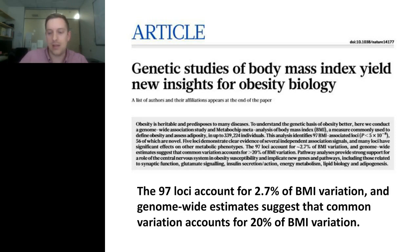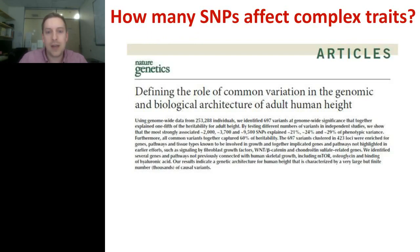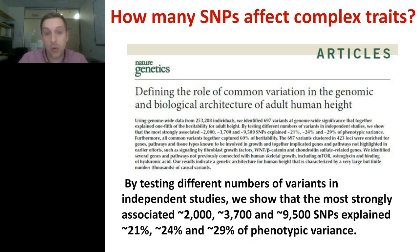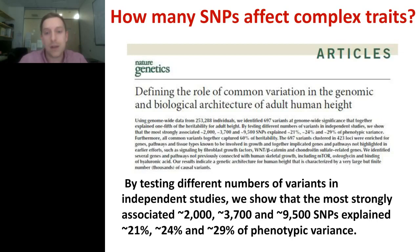There was another paper from October of last year looking at genetic variation in human height. They used 253,000 individuals and were able to find 697 variants explaining 20% of phenotypic variation. But to get to 21% they needed roughly 2,000 SNPs; to reach 24%, 3,700 SNPs; and to reach 29%, 9,500 SNPs. So clearly the SNPs associated with complex traits — many of these are not strongly Mendelian, but rather you have a large group of SNPs that appear to be associated with phenotypic variants.